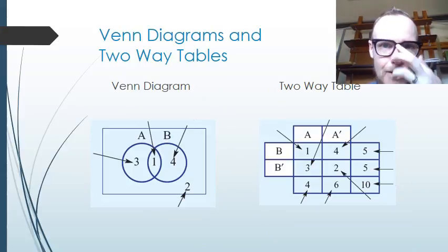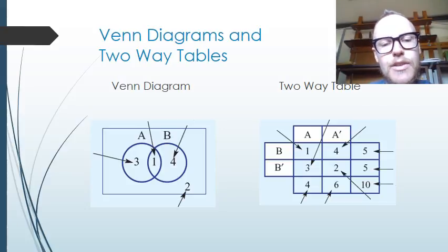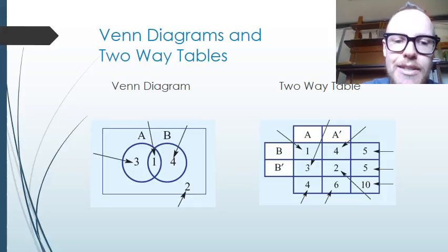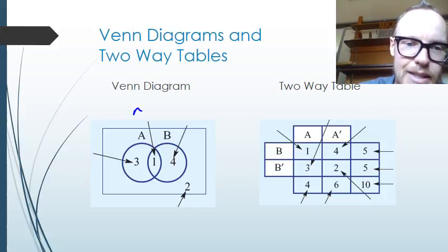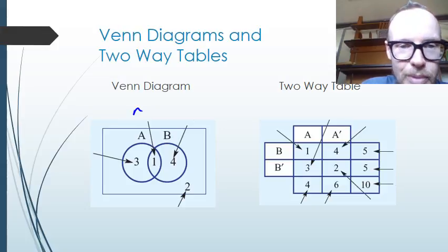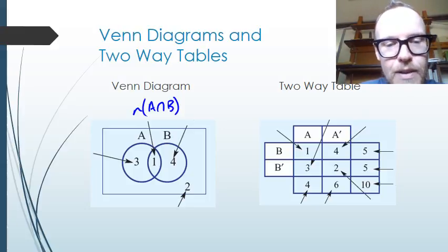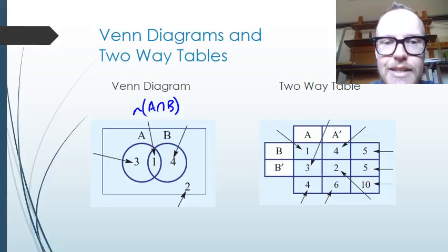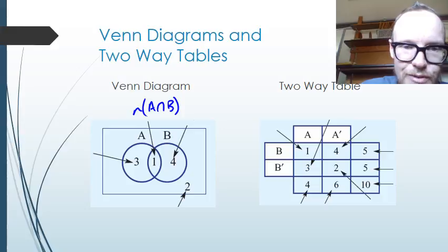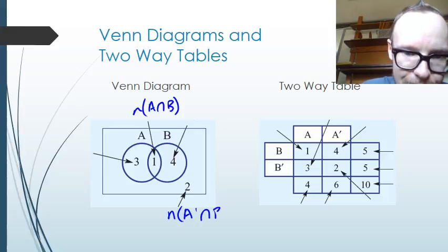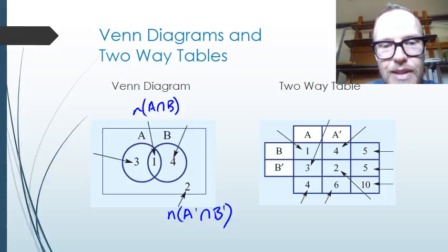Let's have a look at how we can represent these intersections using Venn diagrams and two-way tables. For our Venn diagram on the left, the intersection of A and B is represented as the part that is common to both — the number of elements intersected with A and B. We've got one element that is the same in set A and set B. Outside of any of the circles, that's the number of elements that aren't in A or B — they're in neither set; that's the intersection of not-A and not-B.